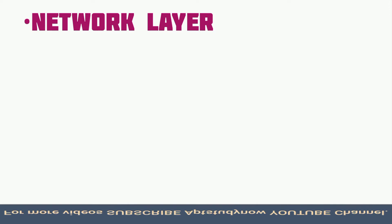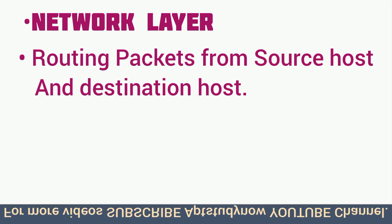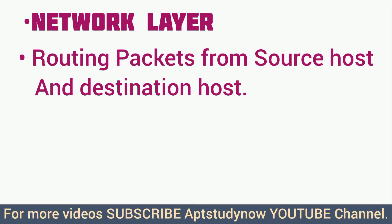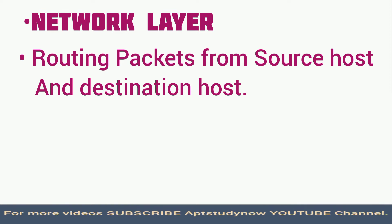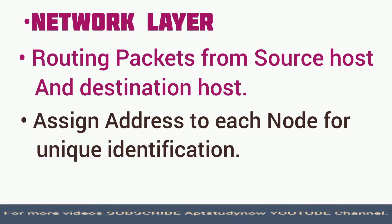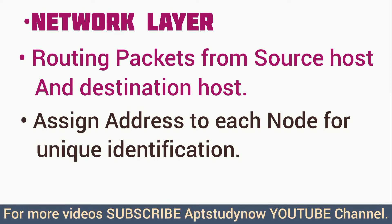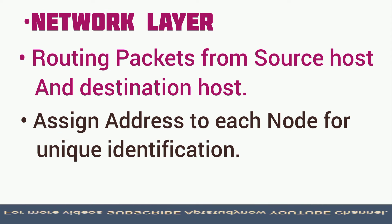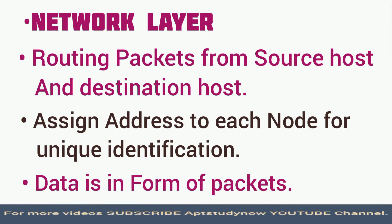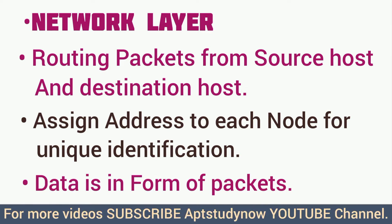The third layer is the network layer. In this layer, routing of packets from source host to destination host takes place — meaning the movement of packets from source to destination. This layer is responsible for address assignment and uniquely addressing hosts in a network. In the network layer, data is divided in the form of packets.